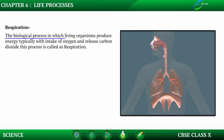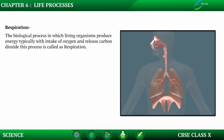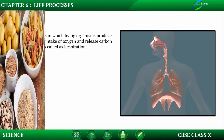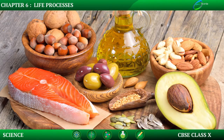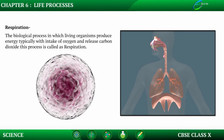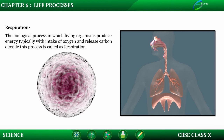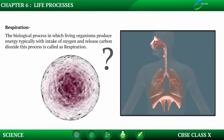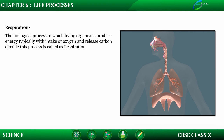The biological process in which living organisms produce energy, typically with intake of oxygen and release of carbon dioxide, is called respiration. Before respiration, we discussed one type of life process — nutrition. In nutrition, all required components such as carbohydrates, proteins, and fats are supplied to our cells. Our cells require energy, and these components provide that energy. Cells then use this bound energy through another process, which is respiration.